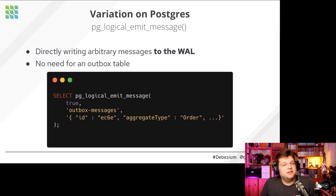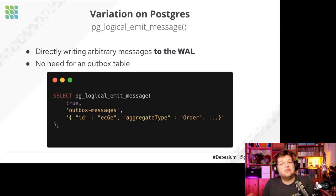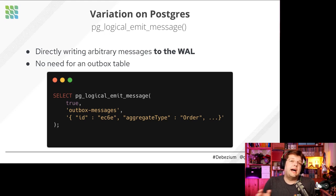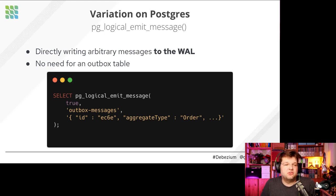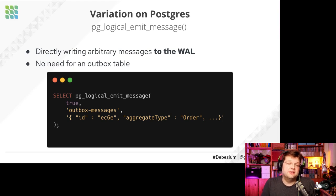An interesting alternative for implementing the outbox pattern in Postgres is the PG Logical Emit Message API. This function allows you to emit an event straight to the transaction log without materializing it in any table. You specify whether it should be transactional, a type, and the message payload. Debezium can also capture those events. This avoids the need for additional disk space for the outbox table and eliminates housekeeping — once outbox messages have been sent, you'd normally need to delete them from the table, but with this API those messages only ever exist in the transaction log.